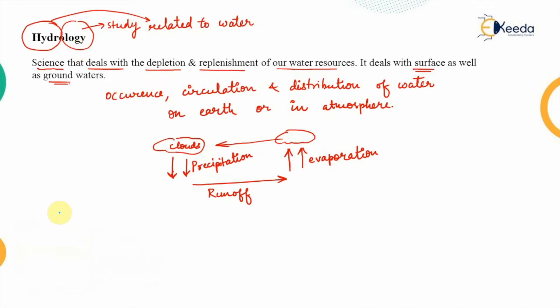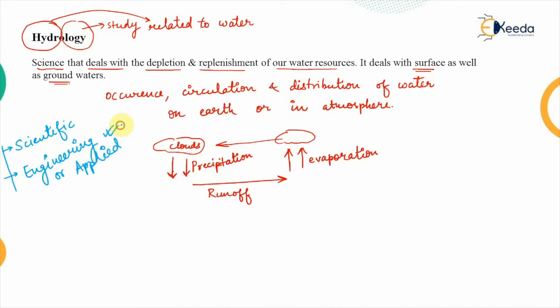Hydrology is classified into two types: scientific hydrology and engineering hydrology. Scientific hydrology deals with the study of water concerned with academic aspects — that is, records of past data of water sources and their usage. Engineering hydrology is concerned with the engineering applications of water sources and the different water processes. Engineering hydrology is also known as applied hydrology, and that is the aspect we are going to deal with in this subject.